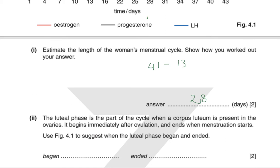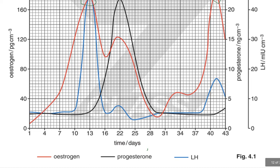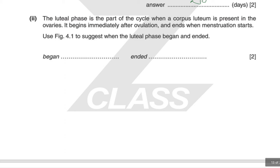The luteal phase is the part of the cycle when a corpus luteum is present in the ovaries, beginning immediately after ovulation and ending when menstruation starts. Ovulation happens when the surge of LH is at its peak, which I would say is around day 13, so the luteal phase began around day 13. It ended at the dip of progesterone and oestrogen as the corpus luteum degenerates — at that point there's no more progesterone and menstruation is triggered, so around day 29 or 30. I'll say day 13 to day 29. The organ that secretes luteinizing hormone is the anterior pituitary gland.